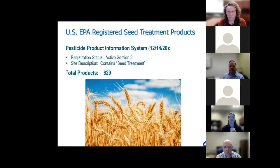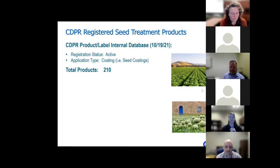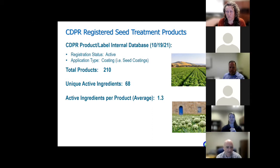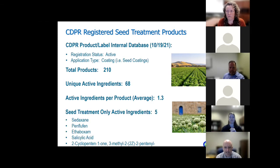As of December 2020, according to the US EPA Pesticide Product Information System, there were about 629 federally registered products with seed treatment in the site description. Looking at California-registered seed treatment products using criteria of active products with an application type of coating, we identified 210 seed treatment products registered in California as of October of this year—about a third of the 600-plus federally registered products. There are 68 different active ingredients registered for use in seed treatment products, and many products contain more than one and as many as five active ingredients. The average number of active ingredients per product was 1.3. Only five active ingredients are unique to seed treatment products with no other active registered uses.